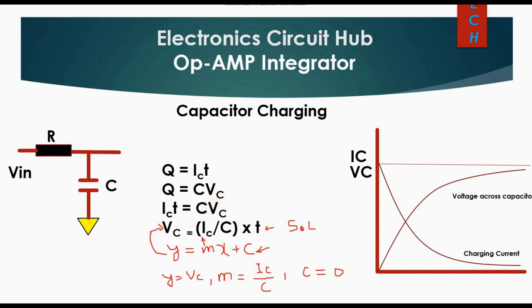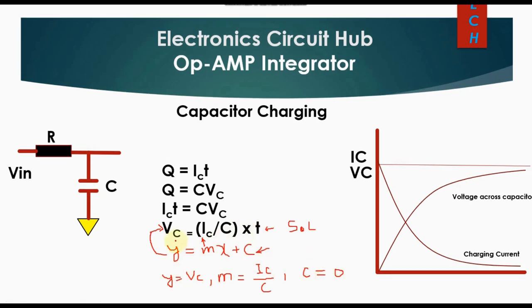From this, VC = (IC / C) × T. This is the equation for a straight line of the form Y = MX + C, where Y = VC, M = IC/C, and C = 0. This means the voltage across the capacitor should develop linearly.